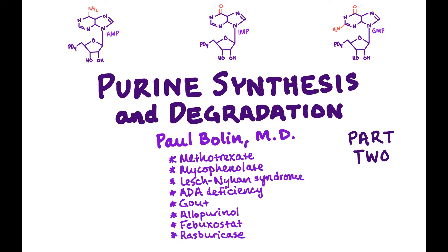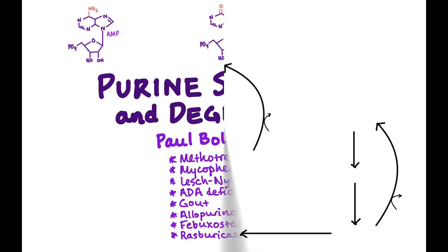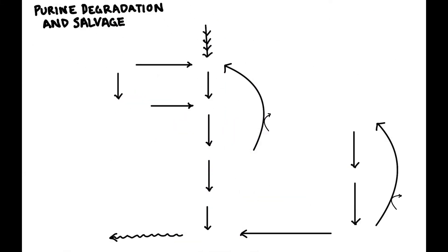Here we're going to talk about purine degradation and salvage. This is part two of our talk on purines. As you may remember, purines are synthesized using the precursor molecule PRPP, and there are multiple steps to get to our grandfather of purines, IMP — inosine monophosphate. Inosine monophosphate can go into making purines, but it's also part of the degradation pathway.